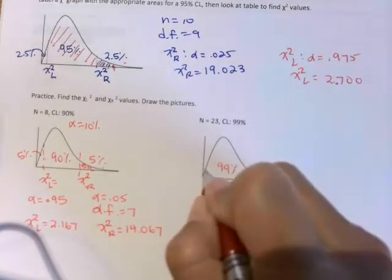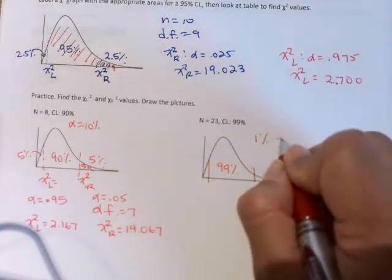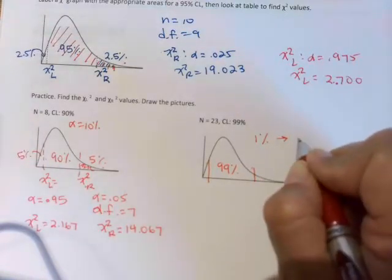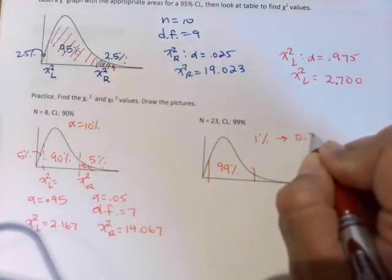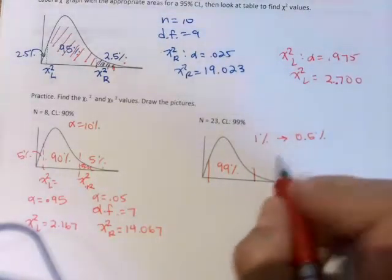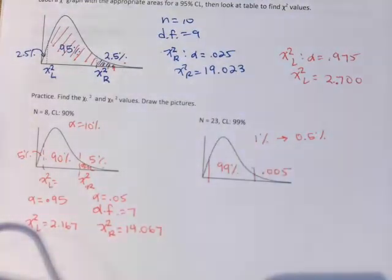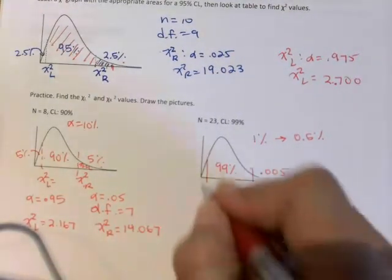99% in the middle. That means I have 1% to share, so it's going to be a half a percent in each tail. So be careful, half a percent.